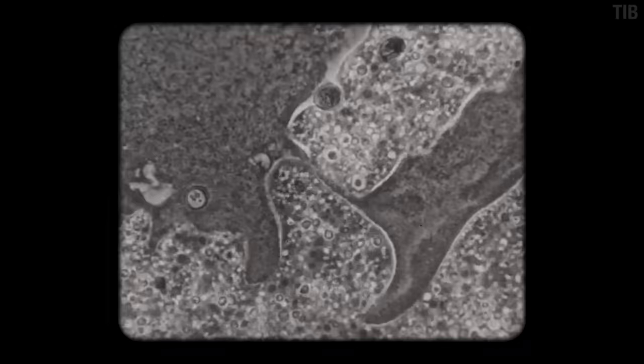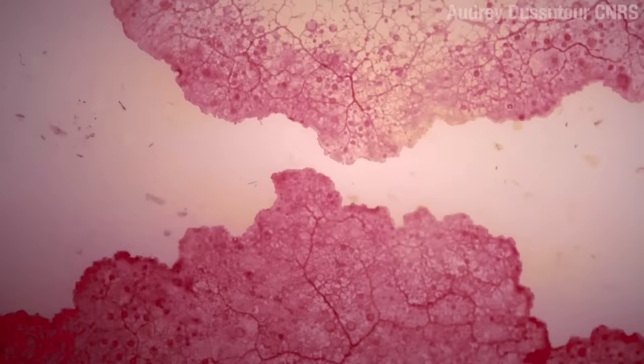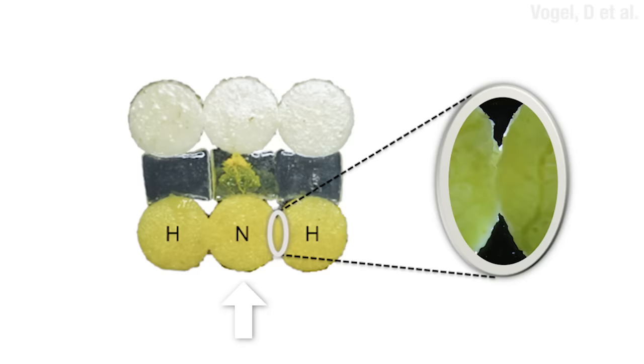Slime molds can fuse with other slime molds. The veins just kind of merge into each other. Oh, that's satisfying. No, Jerry, it's not sexy. All right, maybe it's a little bit sexy. But here's the kicker. If a slime mold that has learned to crawl over salt merges with one that hasn't, it passes on that knowledge.